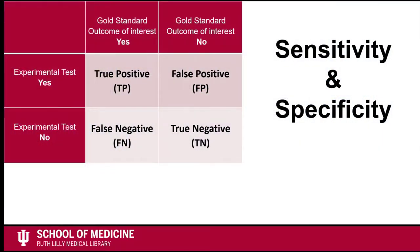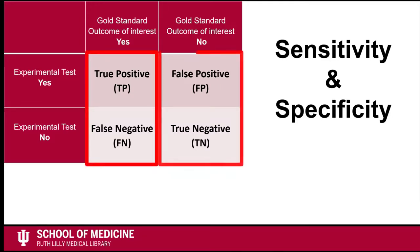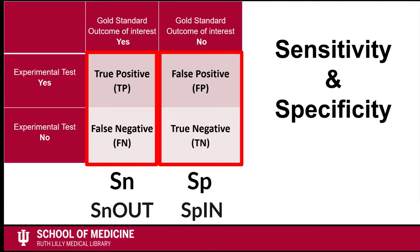For a quick knowledge check, try to remember which numbers in a 2x2 table are used to calculate sensitivity and which numbers are used to calculate specificity. Sensitivity and specificity calculations use numbers that are vertical on the 2x2 table. Sensitivity is on the left and specificity is on the right. Also, you can remember the significance of specificity and sensitivity using the mnemonic SPIN and SNOUT.